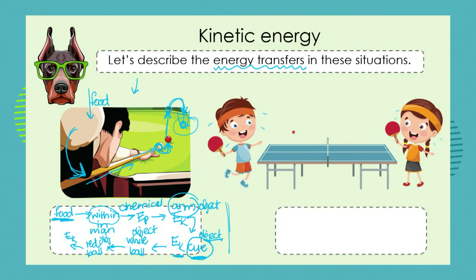We've got a whole chain of energy transfers: first within an object — the man — and then from object to object to object to object as we see the set of actions take place. While those actions are taking place we are seeing the energy in its form of kinetic energy.